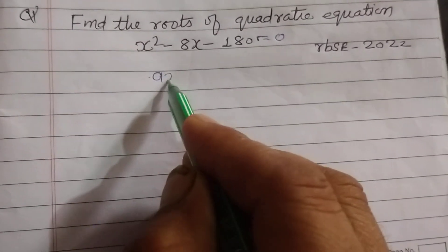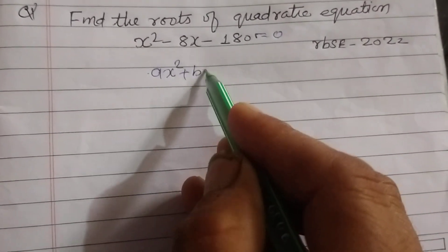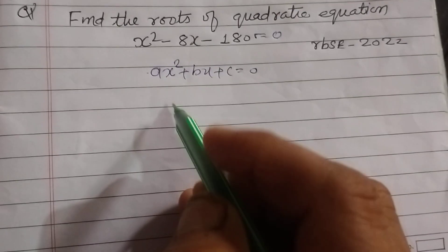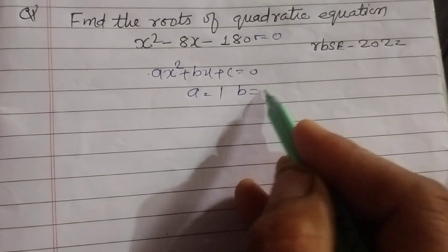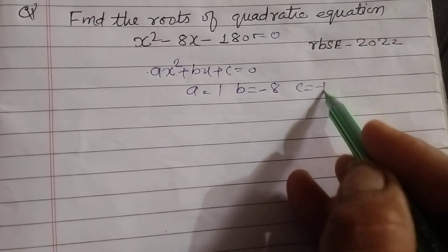Comparing with ax² + bx + c, the standard form: a = 1, b = -8, and c = -180.